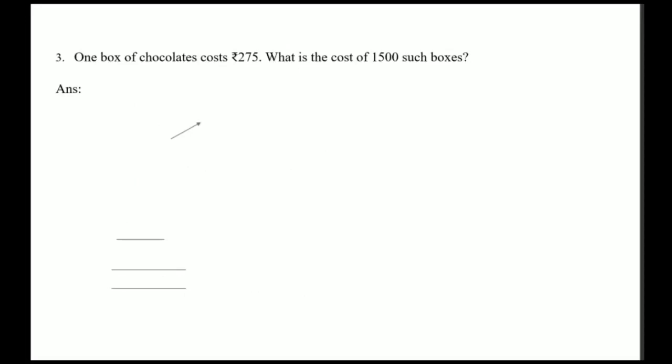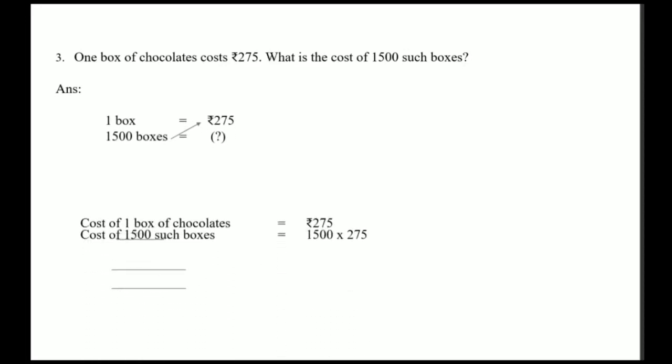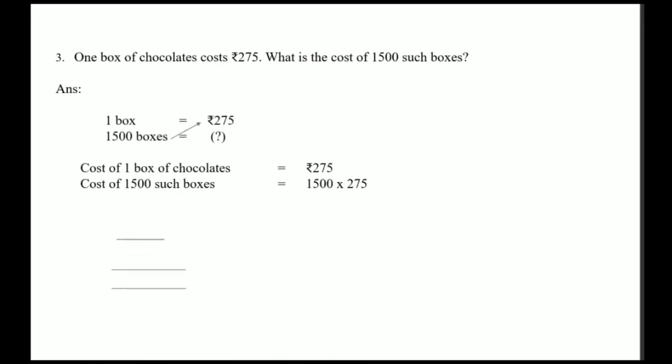Here, the cost of one box is given and you have to find the cost of 1500 boxes, so you will again do multiplication. Cost of one box of chocolate = rupees 275. Cost of 1500 such boxes = 1500 multiplied by 275. Here also, two zeros are there in 1500 which you can ignore and add at the end.